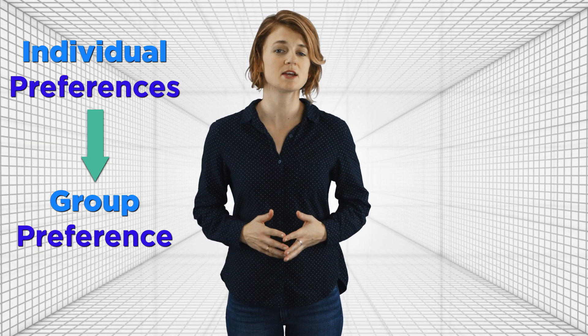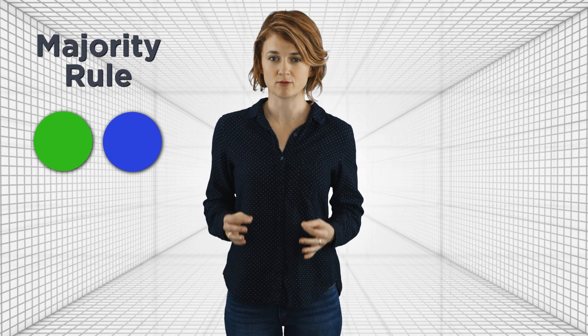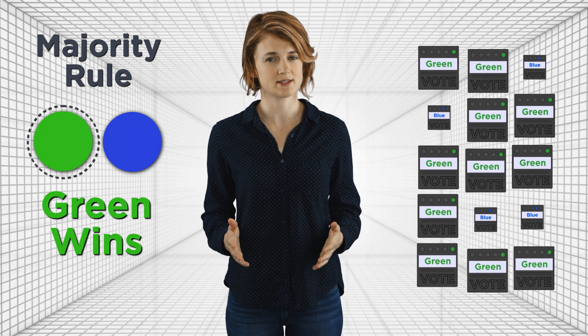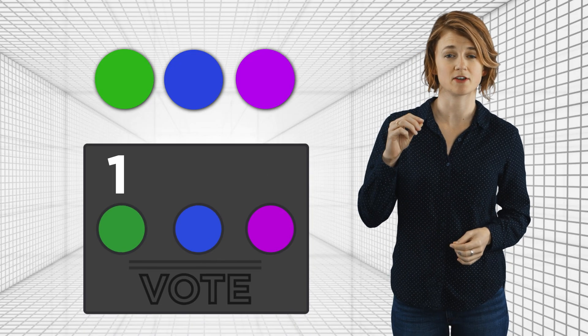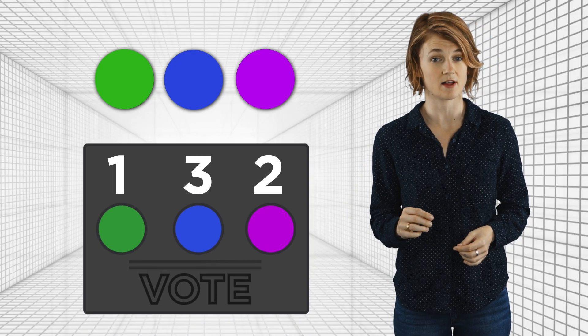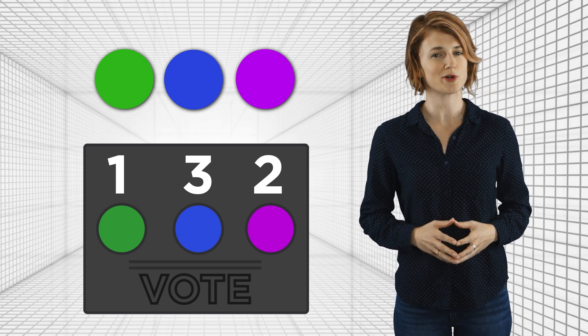For the sake of example, let's say we're voting to determine the best color. If there are only two options, like green and blue, we'd probably select the winner based on majority rule — if the majority of people prefer green to blue, green wins. Now let's try it with three colors: green, blue, and purple. Everyone will submit a ballot with ranked preferences, ranking their favorite 1, second favorite 2, and least favorite 3. Using everyone's individual ranked preferences, we want to create a group ranking.